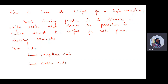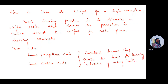As I told already, learning the perceptron involves choosing the values for the weights W1 up to WM. We have two different rules: one is the perceptron rule, and the second one is the delta rule. They are important because they provide the basis for learning networks of many units.